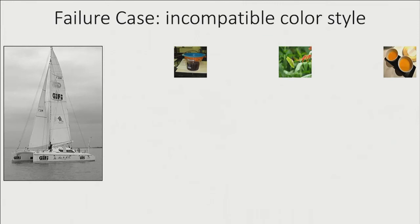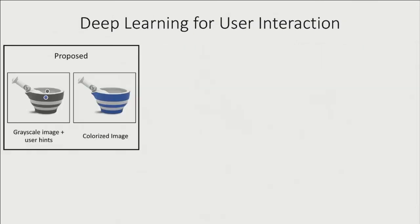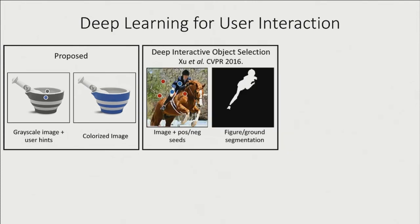For global transfer, our method sometimes produces less satisfactory results if the reference image's colors do not fit the input image. In conclusion, we have developed a deep learning-based method which can map a grayscale image along with user hints into output colorization. The system is learned in an end-to-end manner. We see this work as part of a larger trend of deep learning-based methods integrated with user interaction, for example in applications like interactive image editing or sketch-to-photo.